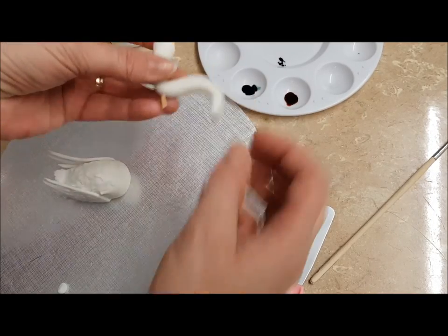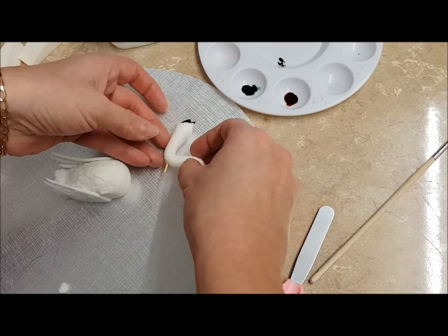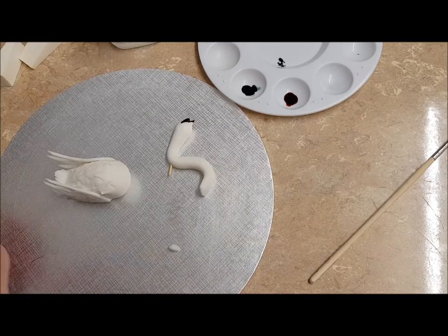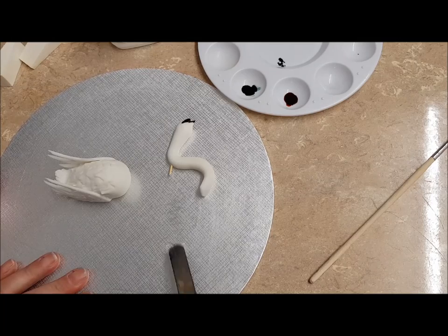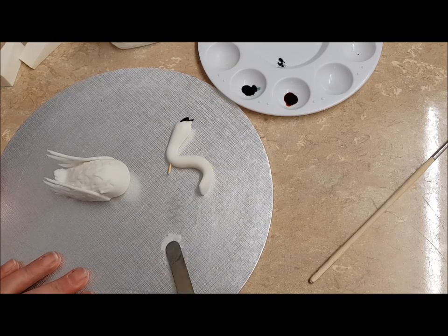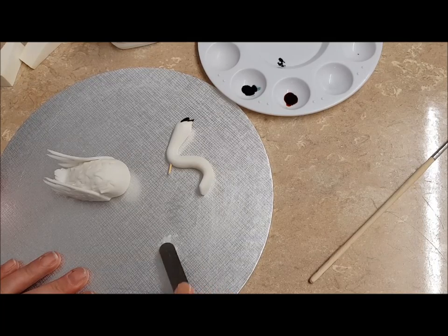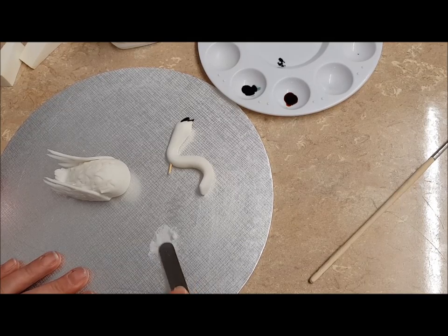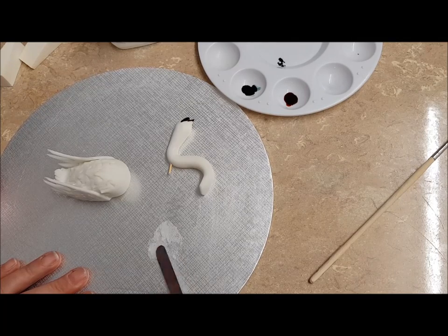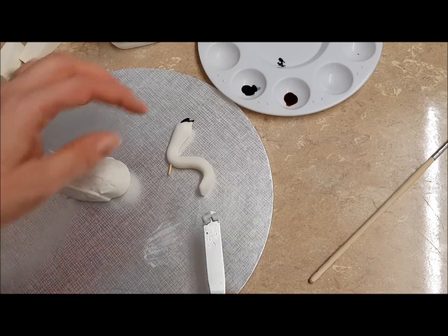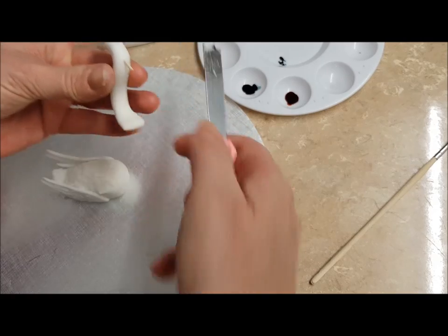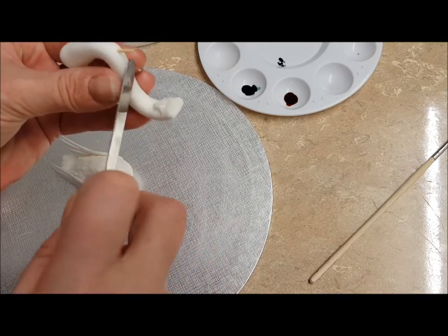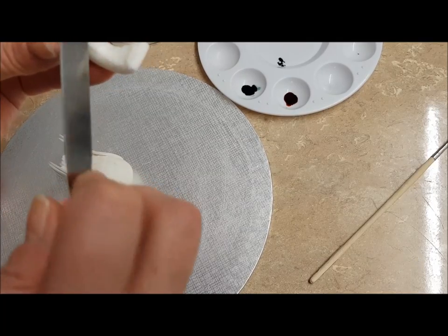Set that aside to dry. I noticed that the neck was breaking, so I'll just put a little stick in there. Then you want another bit of gum glue, add a little bit of water to it, and just mash it up into like a paste. Place that on the bottom of the neck where it's going to go underneath, and a little bit up towards the stick, so it'll help it stick.